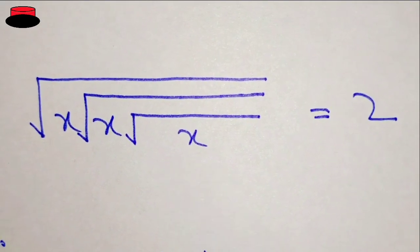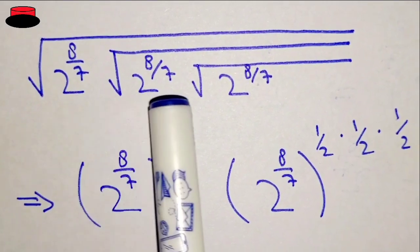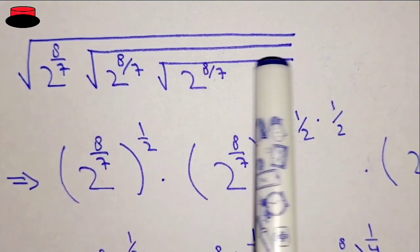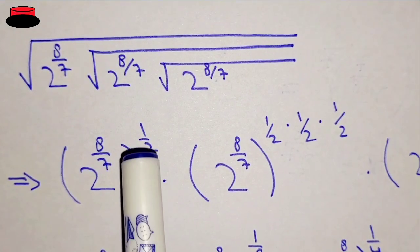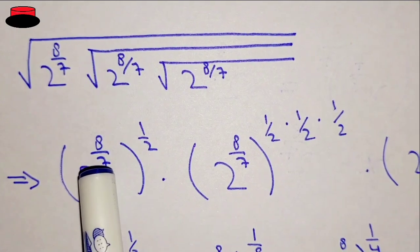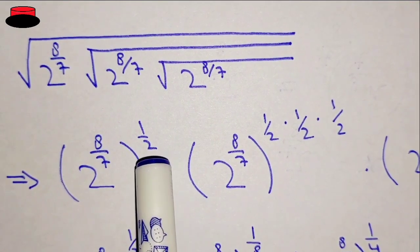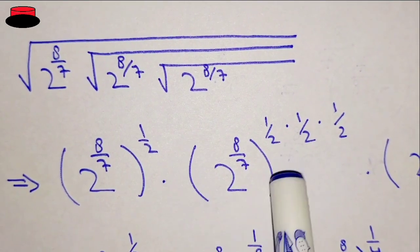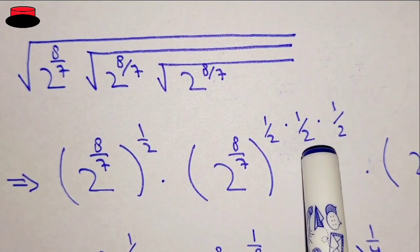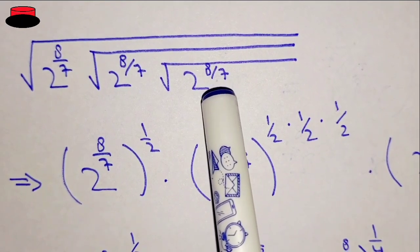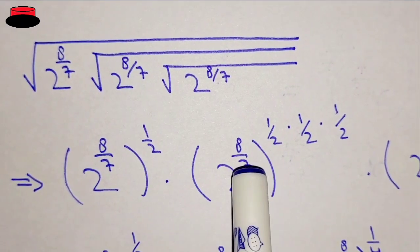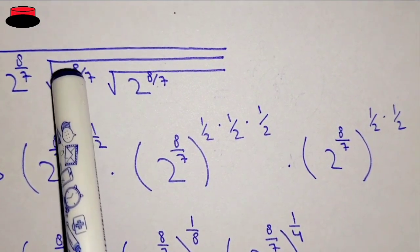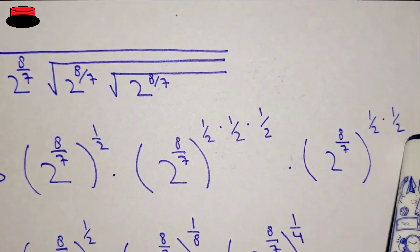We have substituted the value of x in this question and will apply the same method — putting all these values and putting the powers above them. So: 2 power eight over seven, whole power one upon two for this value; 2 power eight over seven, whole power one upon two into one upon two into one upon two for this value. This middle value has two under roots above it.